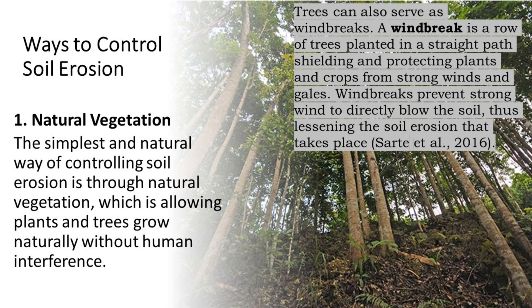Ways to control soil erosion: 1. Natural Vegetation — The simplest and natural way of controlling soil erosion is through natural vegetation, which is allowing plants and trees to grow naturally without human interference. Trees can also serve as windbreaks — a row of trees planted in a straight path shielding crops from strong winds and gales — thus lessening soil erosion.